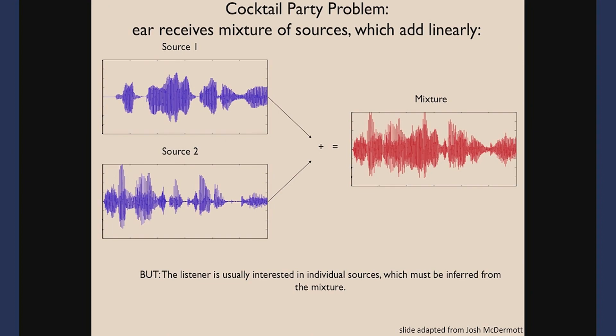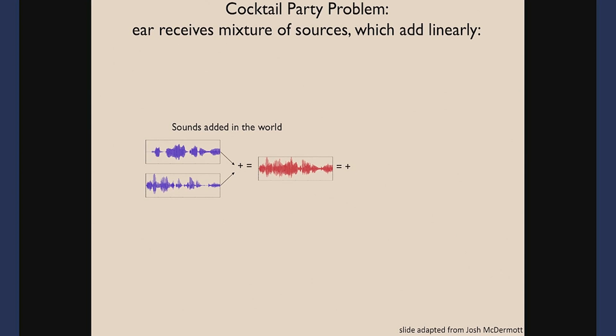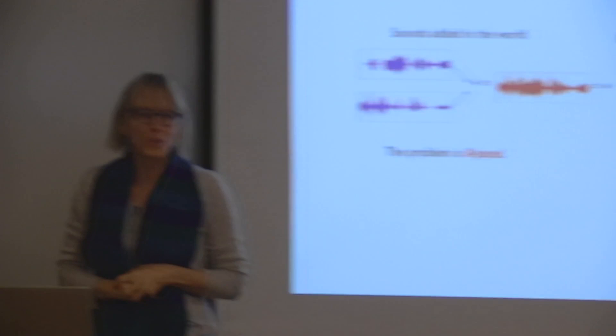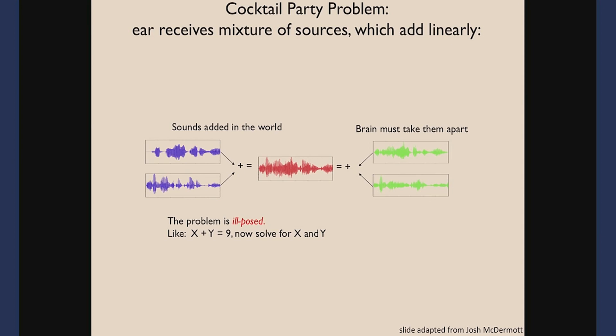Regarding intensity: a Fourier analysis of the signal gives you the energy at each of those frequencies, which is what a spectrogram shows. The listener is usually interested in individual sources even though they're superimposed on other sources — the brain has to pull them apart. This is a classic ill-posed problem: given the combined signal, we have no way to go backwards to the individual sources. It's like saying x plus y equals 9, now solve for x and y.